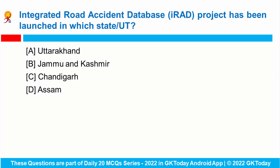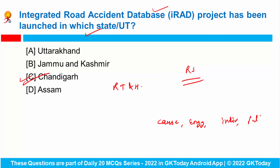The Integrated Road Accident Database project has been launched in which state or union territory? This has been launched in the union territory of Chandigarh, and it is an initiative of the Ministry of Road Transport and Highways to improve road safety in the country. The centralized accident database allows hosting and accessing all accident-related data by various departments and stakeholders. Details include causes of road accidents, road engineering defaults, negligence of individuals, patterns in accidents, and more. This data will be used by all departments to analyze causes of accidents and formulate strategy.